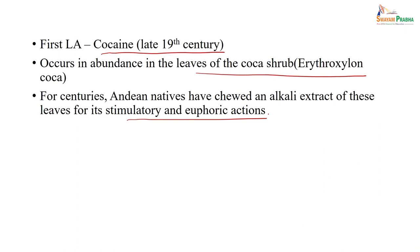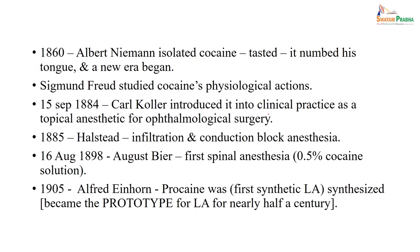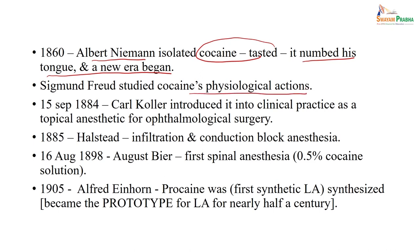That is how the local anesthetic action was initially identified. Later, in 1860, a scientist called Albert Niemann isolated cocaine, and identified that whenever it was chewed or placed in the local tongue area there is a numbness of the tongue — a partial loss of sensation. After isolation of cocaine by Albert Niemann, Sigmund Freud studied its physiological action — why it causes numbness. On September 15, 1884, Karl Koller introduced a new clinical practice using it as a topical anesthetic.